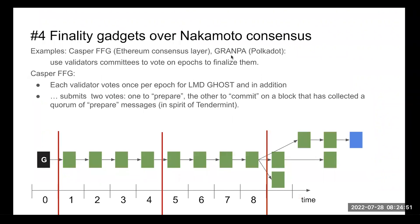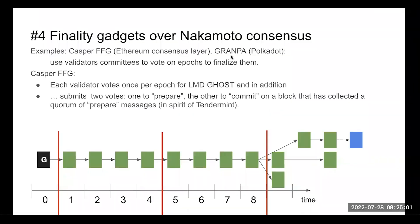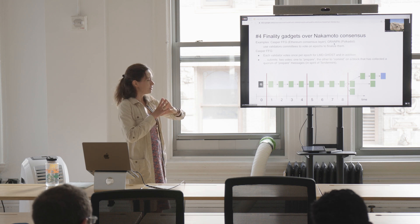The fourth approach is finality gadgets on top of Nakamoto consensus. Casper FFG is the finality gadget for Ethereum, and Grandpa is the finality gadget on top of Polkadot's Nakamoto consensus. Some people think they help with long-range attacks, but they actually solve a different problem. The idea is to use validator committees to vote on epochs to finalize them — running a committee-based BFT chain on top of your longest chain to guarantee deterministic finality.